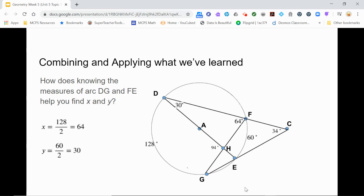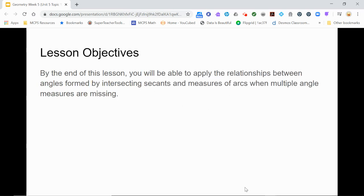For more practice, see if you can find the measures of the other missing angles and arcs in this picture. And now you've seen some ways to apply the relationships you have learned to solve circle problems with many different missing angles or arcs.